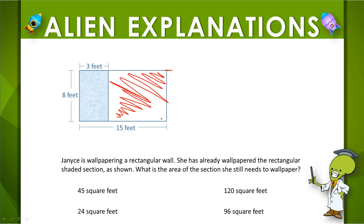We already know this is 8 because the wall is rectangular and opposite sides of a rectangle are equal in length, so we know that's 8 feet. And then we need to know this distance here. How can we find that?